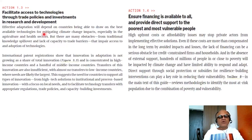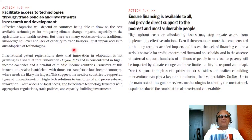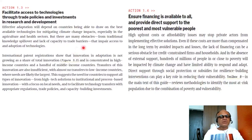Effective adaptation will depend on countries being able to draw on the best available technologies for mitigating climate change impacts, especially in the agriculture and health sectors. Food security and health security are critical, and climate is heavily impacting both. We need to adapt to those even as we try to mitigate emissions and climate risks themselves. But there are many obstacles — from traditional knowledge spillover and lack of capacity to trade barriers — that impair access and adoption of technologies.